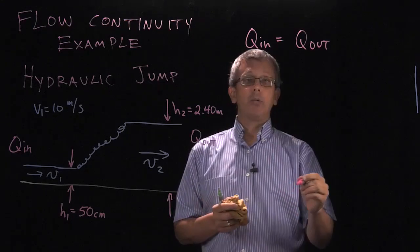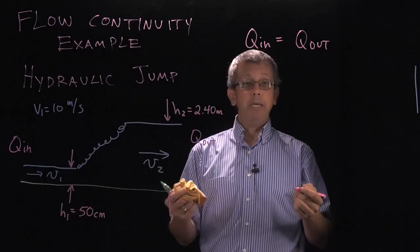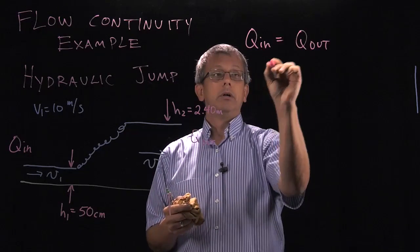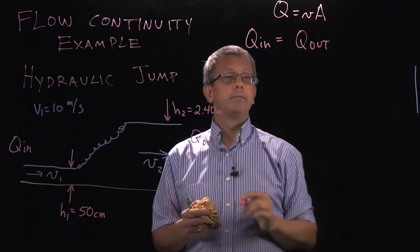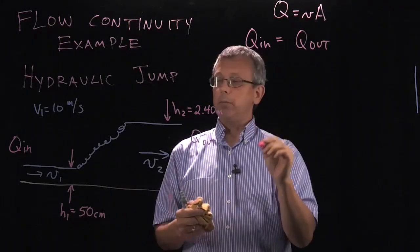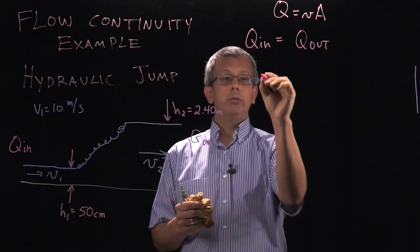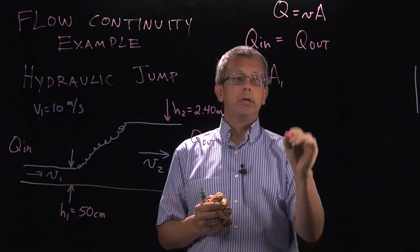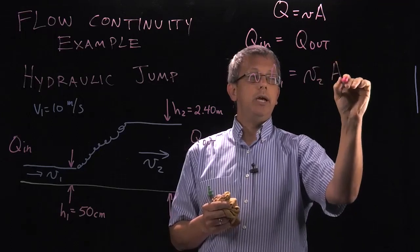Let's go ahead and use our relationship Q equals VA. We can relate our speed to our flow. If we recognize that Q is equal to VA, let's plug that in here. So for our value in, which I believe we're calling 1, and our value out, which we're calling 2, we have V1 times area 1 is equal to V2 times area 2.